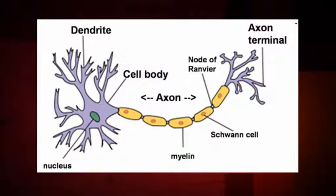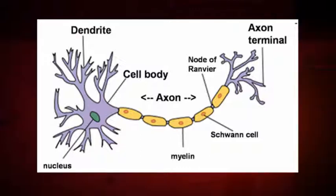Let's start off by talking about myelin. It's a substance rich in lipids and proteins that forms layers around the axons of nerve fibers and functions as an insulator. It is essential for the proper functioning of nerves. The main function of a myelin layer, or sheath, around axons is to increase the speed at which nerve impulses propagate along the myelinated fiber.